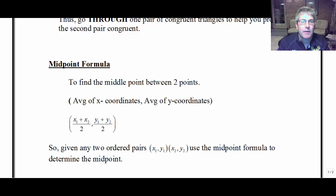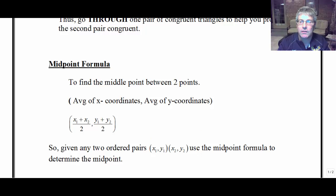Take the average of the x's. Same with the y-coordinates — take your two y-coordinates, add them up, and divide by two. That's the average of the y's, and then you will get to your midpoint.